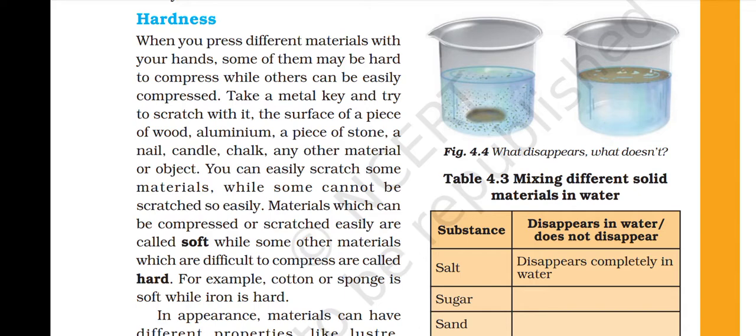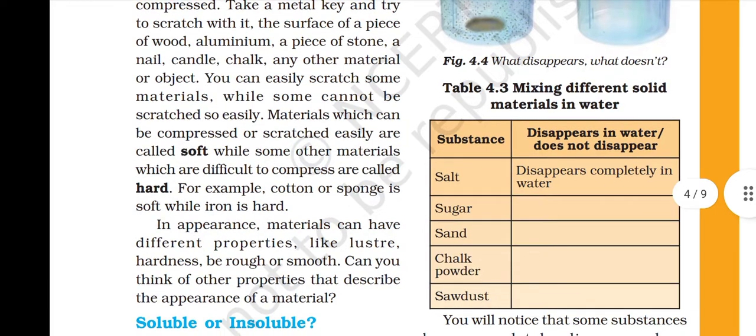For example, cotton or sponge is soft, while iron is hard. Iron is a metal. But as compared to cotton or sponge, iron is a hard material. In appearance, materials can have different properties like luster, hardness, and rough or smooth texture.